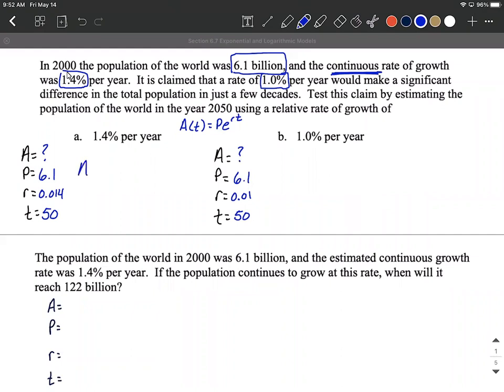Plug all this stuff in and get it into our calculator. We can say A(50) equals 6.1 e raised to the 0.014 multiplied by 50. And we'll do something very similar over here, we're going to plug in 50. Still 6.1 e raised to the 0.01 multiplied by 50 this time.